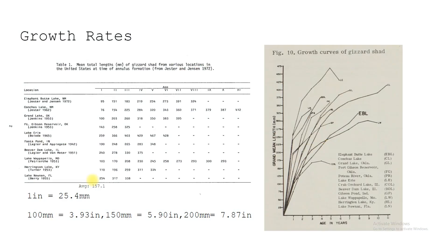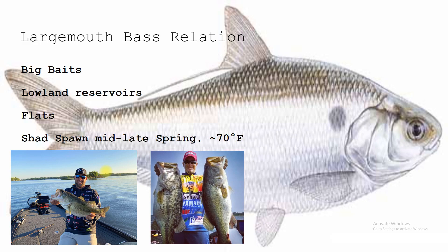Here are some growth rates evaluated by Jester and Jensen in 1972. Looking at 10 lakes throughout the country with different growth rates year to year, the averaged length after one year comes out to about 157.1 millimeters, which is about six inches — six inches in a year. So if a gizzard shad is born in May, by next summer it will be in the six-inch range, anywhere from four to eight inches when they're on the ledges. That's why these big magnum spoons and big hollow bodies make sense — don't be afraid to throw big glide baits for gizzard shad eaters. In lakes where gizzard shad are abundant and a great food source for largemouth bass, use big baits.